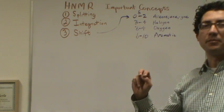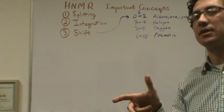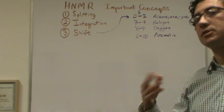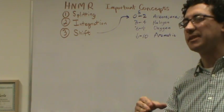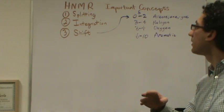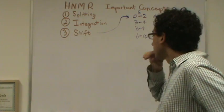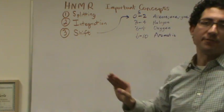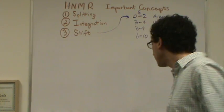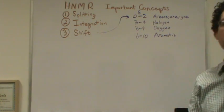One is splitting, and I'm not going to talk about splitting within the same carbon, so I'm just going to talk about analyzing your general HNMR spectra. Then we'll talk about integration, and then finally shift. So let me give you the basics of this. First of all, splitting.